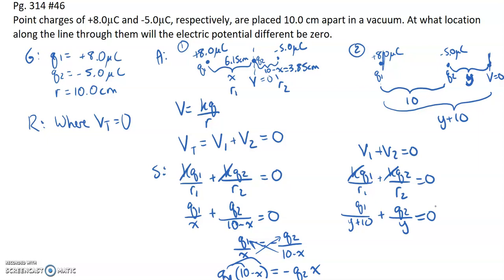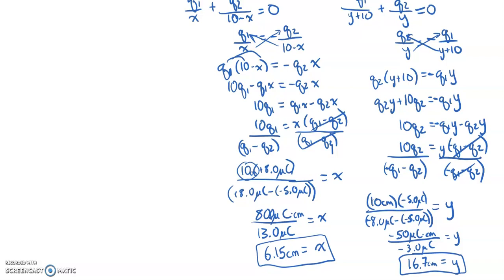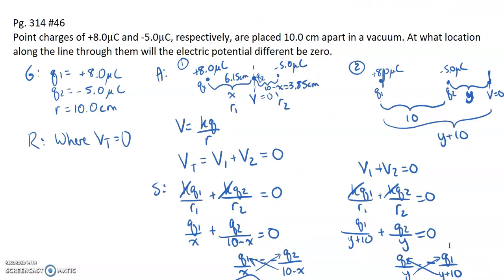Working through the same algebra, be careful not to drop the negative on q2. If you drop it, you get 3.85, which is just 10 minus the Case 1 answer — so keep that negative throughout. The numerator ends up negative, and the denominator becomes negative q1 minus q2, which gives negative 8 plus 5, equaling negative 3 micro coulombs. Negative over negative gives a positive result: y equals 16.7 centimeters.